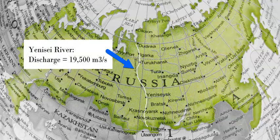One of the largest rivers on the planet is in Russia — the Yenisei — which essentially splits Russia into eastern and western sections. It covers a great distance and has a discharge of around 19,500 cubic meters per second, flowing into the Kara Sea.